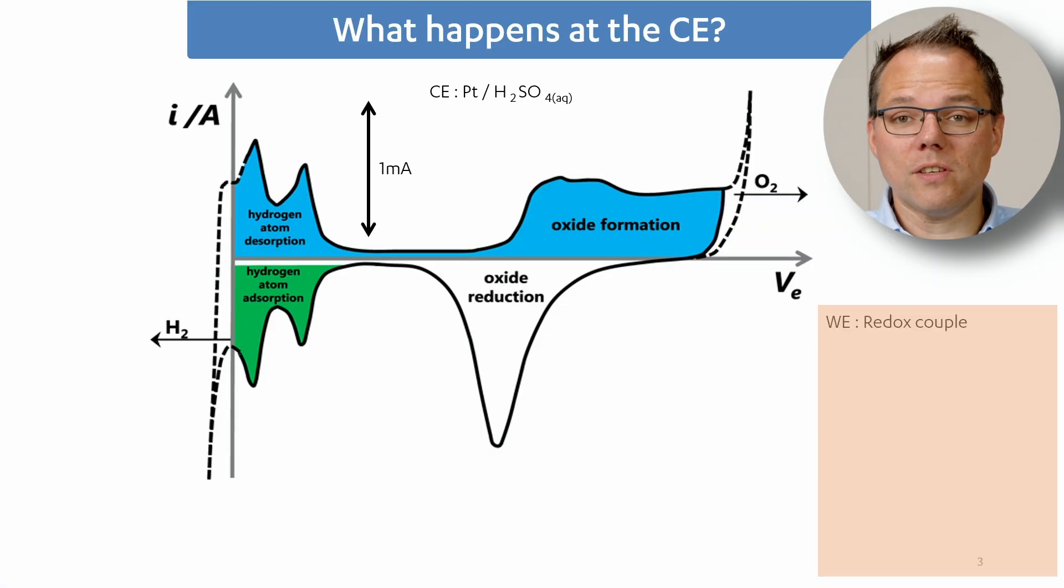This potential and how it works has a few implications that I would like to have a look at right now, just to have a look at what happens at your counter electrode. I have here a CV of a platinum electrode in sulfuric acid. Platinum is a very popular material for counter electrodes, so this is why I've chosen that one. And on the right side at the bottom you will see a very common CV, just a reversible redox couple.